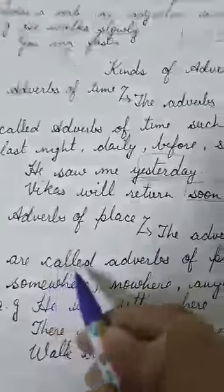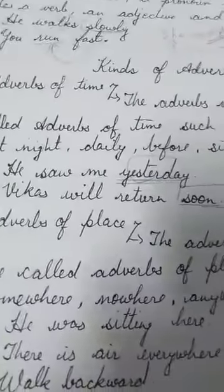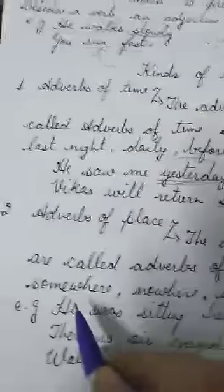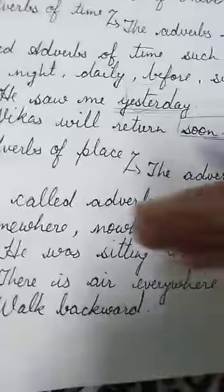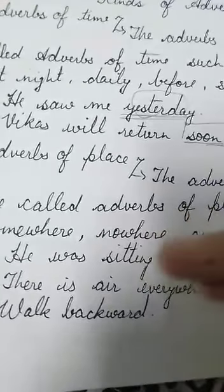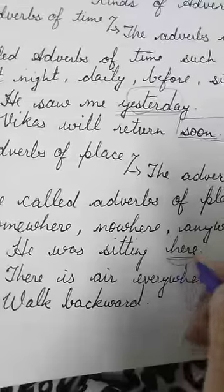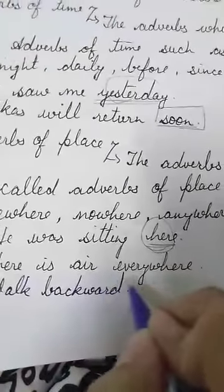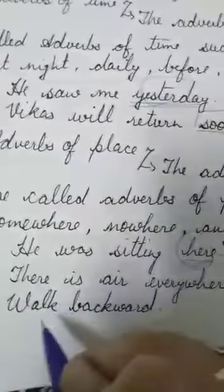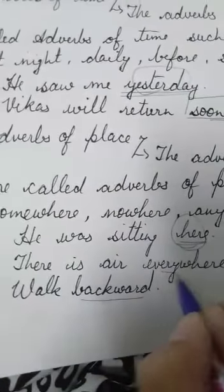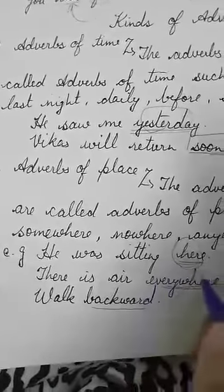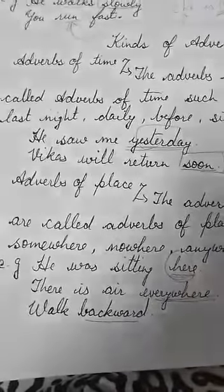Next, we have adverbs of place. The adverbs which express place are called adverbs of place — those adverbs which denote place. Such as: everywhere, nowhere, somewhere, here, there, anywhere, near, backward, etc. For example: he was sitting here. Where was he sitting? He was sitting here — 'here' is telling about the place. Another example: there is air everywhere. Walk backward. These words are telling about place, so they are adverbs of place. I hope you have understood this concept.